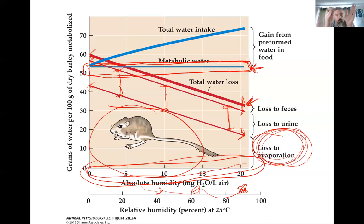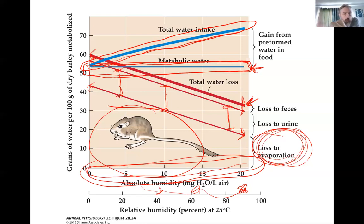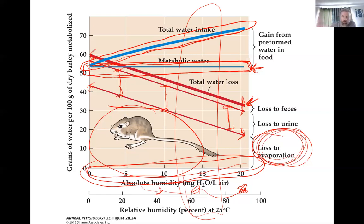As we get more and more humid, we lose less and less to evaporation — that's good. Also, as we get more humid, the amount of water in our air-dried foods also increases. So for our little kangaroo rat, the more humid the environment we live in, the happier we are: we minimize water loss, we maximize water gain, everybody's happy.